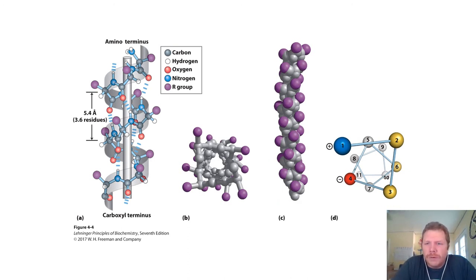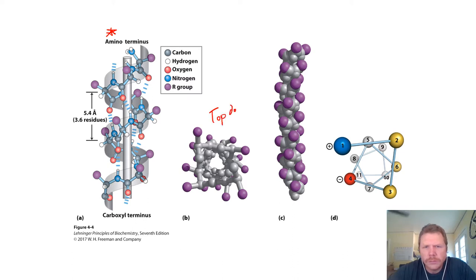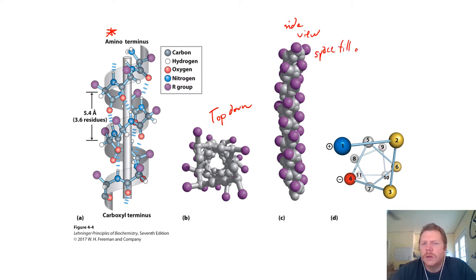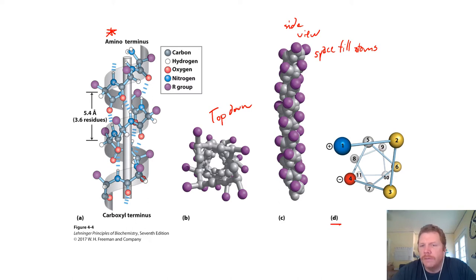So a couple of different depictions: we've got the one we just saw, where I pointed out all the different atoms. This is a top-down view, and this is a side view. One difference is we have space-filling atoms, so there's no space between the individual atoms and we're not really seeing those bonds. Figure D is also the top-down view, but we're only looking at the atoms of the polypeptide.